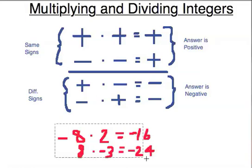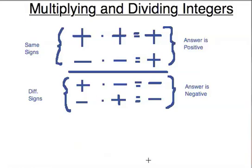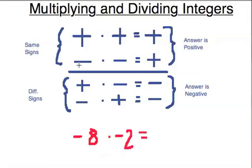Let's try multiplying two negatives — for instance, negative 8 times negative 2. Negative times negative is a positive, because if the signs are the same, the answer is positive. So the answer is simply positive 16. We don't really need to write the plus sign unless you want to. If the sign is not there, it's automatically positive.